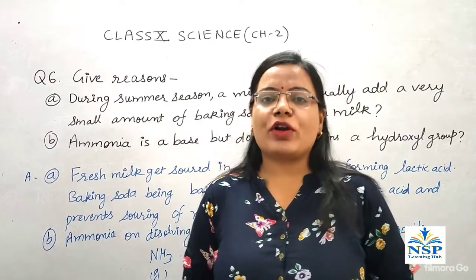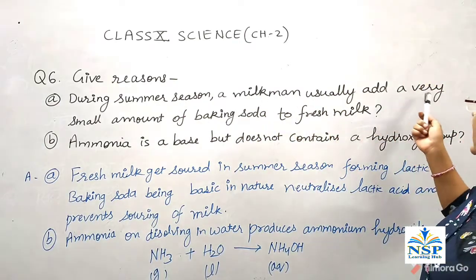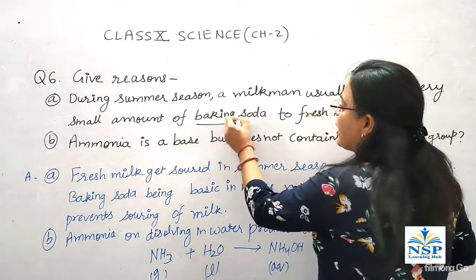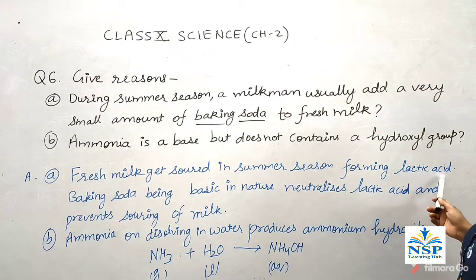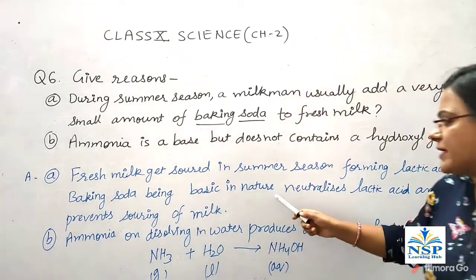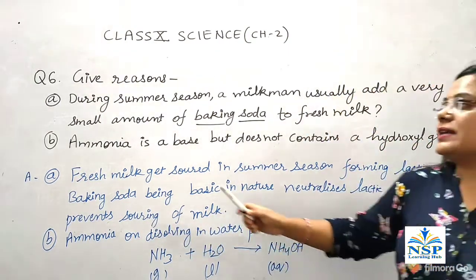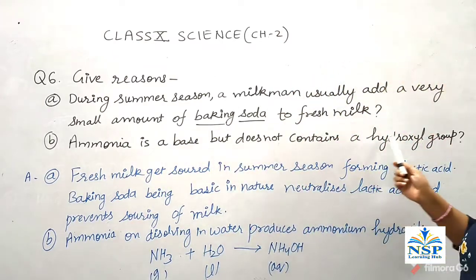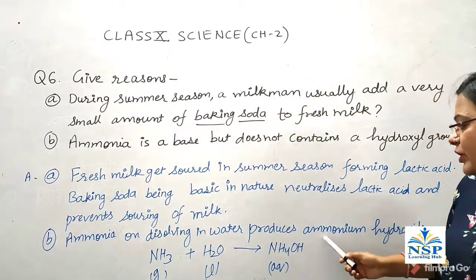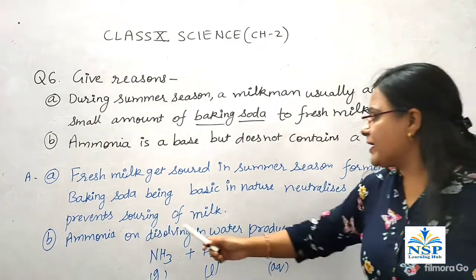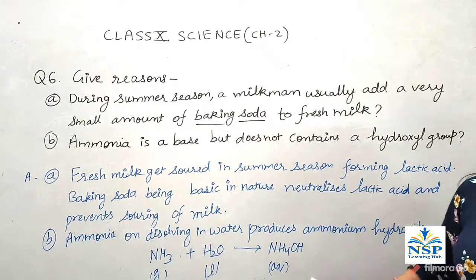Question number 6 — Give reasons: During summer season, milkmen usually add a very small amount of baking soda to fresh milk. Fresh milk gets soured in summer season forming lactic acid. Baking soda, being basic in nature, neutralizes lactic acid and prevents souring of milk. The second question is: Ammonia is a base but does not contain the hydroxyl group. Why? Because ammonia on dissolving in water produces ammonium hydroxide, so it does not contain the hydroxyl group itself. Ammonia reacting with water gives ammonium hydroxide.